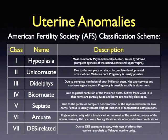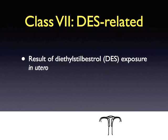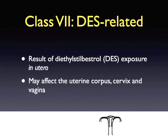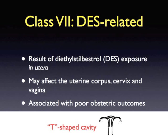The final class of uterine anomaly, Class 7, is a result of diethylstilbestrol (DES) exposure in utero. Until 1971, DES was a non-steroidal estrogen used to prevent miscarriage in pregnant women with prior poor obstetrical outcomes. DES-related anomalies can affect the uterine corpus, cervix, and the vagina. Poor obstetric outcomes have been associated with DES-related uterine anomalies, including an increased risk of abortion, ectopic pregnancy, preterm delivery, and cervical incompetence.